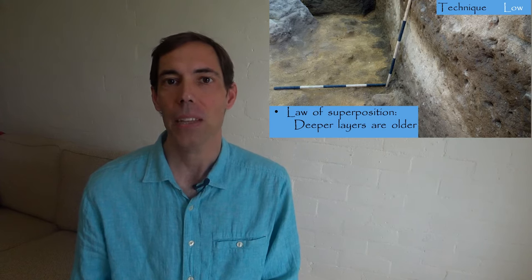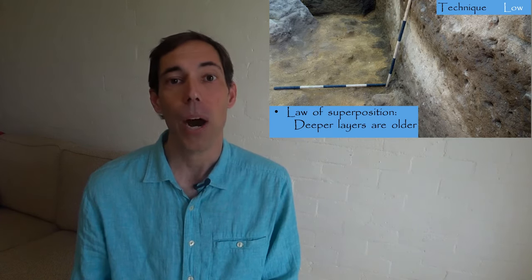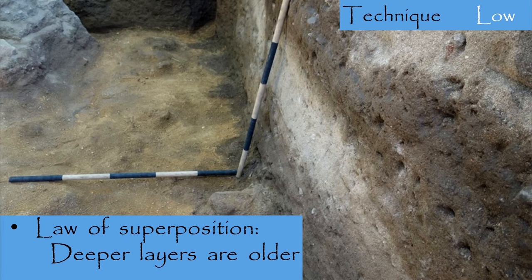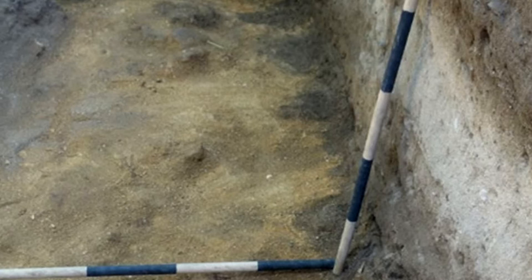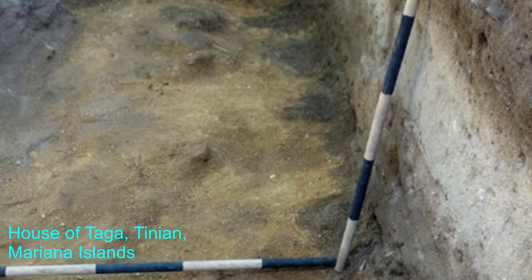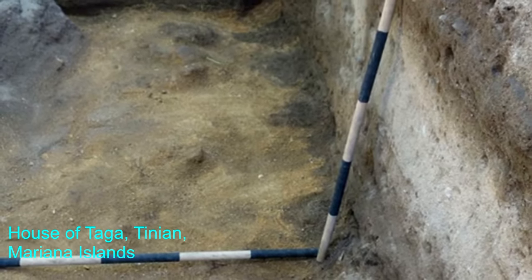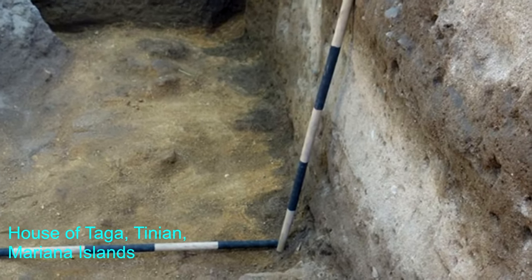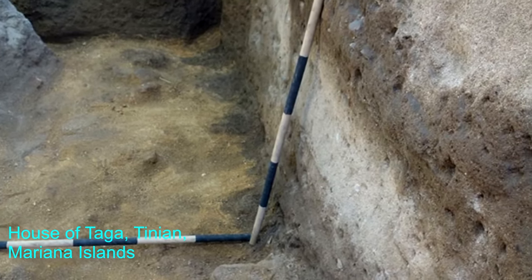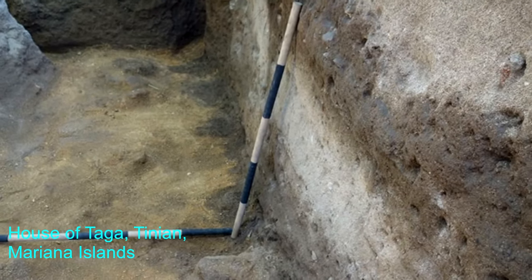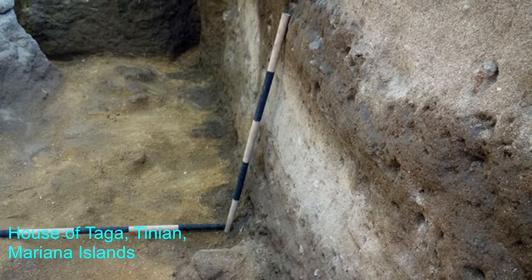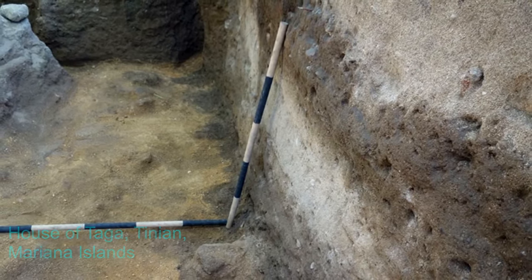One example of a low order of theory is the law of superposition, borrowed from geology. The law of superposition tells us that geological layers are superimposed one over the other. We find older layers buried deeper beneath the ground, and we find the more recent layers closer to the present-day ground surface. This theoretical principle allows archaeologists to perform excavation techniques that treat each stratigraphic layer separately as representing a different unit of time.